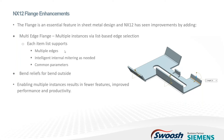We've got flange and tab enhancements, and I'll show you both back-to-back. With flanges, before it was one flange at a time — create a flange, add to the part, create another flange, add to the part. Now with NX12, you can create multiple flanges at the same time by selecting multiple edges. They don't even have to be contiguous edges. In this example, we've got three different edges selected. You can also select multiple sets of edges and assign different parameters to different sets.